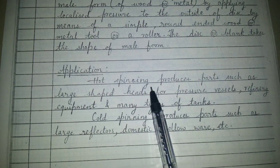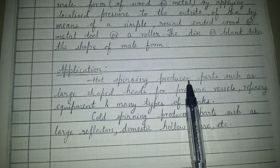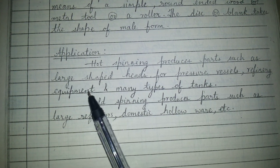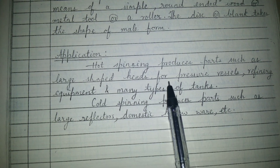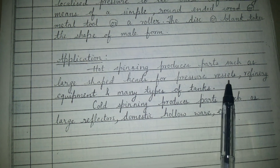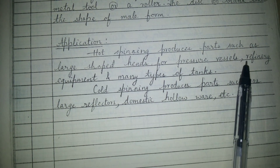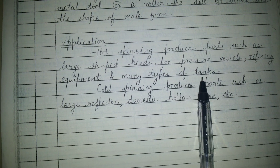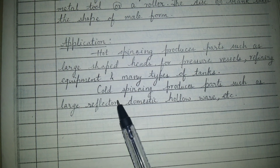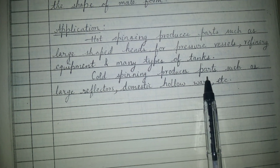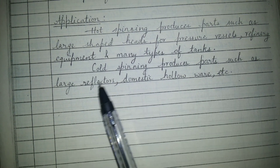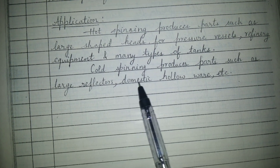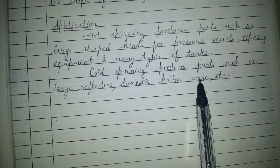The applications: hot spinning produces parts such as large shaped heads for pressure vessels, refinery equipment, and many types of tanks. Cold spinning produces parts such as large reflectors, domestic hollow ware, etc.